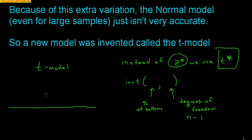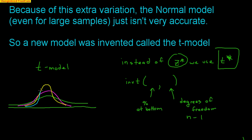The T model looks just like the normal model, but it's a little flatter and pushed down. The T model is ever-changing: as your sample size increases, the T model becomes more and more normal-looking. Small samples produce a very flat, spread-out T model, but as sample size grows, it approaches normality. There isn't one T model — there are multiple, based on sample size.